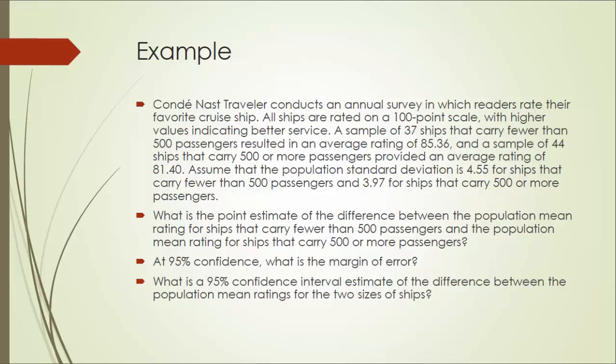What is the point estimate of the difference between the population mean rating for ships that carry fewer than or more than 500 passengers? At a 95% confidence, what is the margin of error? And what would be the 95% confidence interval estimate of the difference between the population mean ratings for the two sizes of ships? As a matter of fact, based on this, we can also conduct hypothesis testing whether smaller ships have better rating than larger ships.